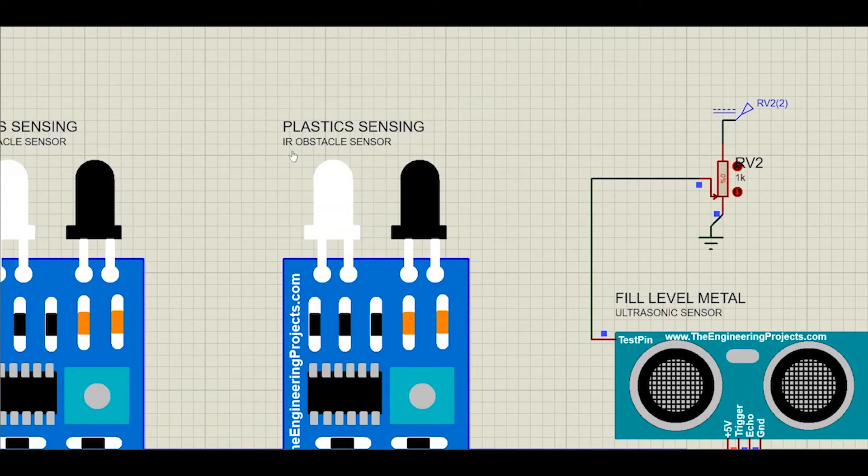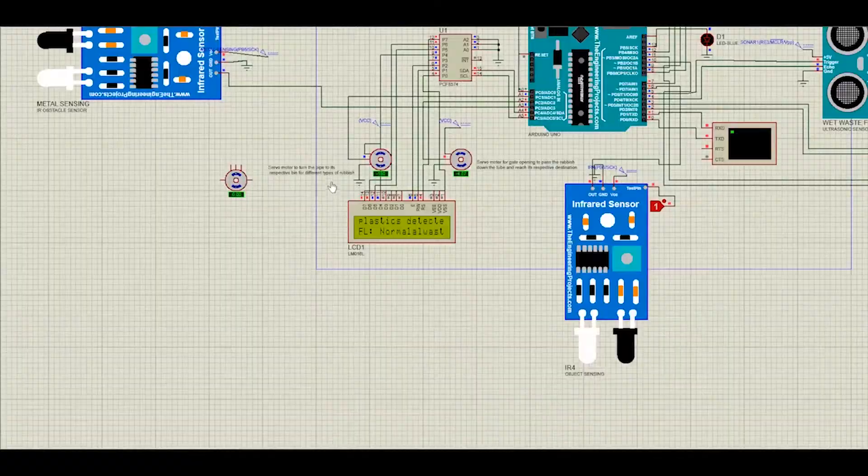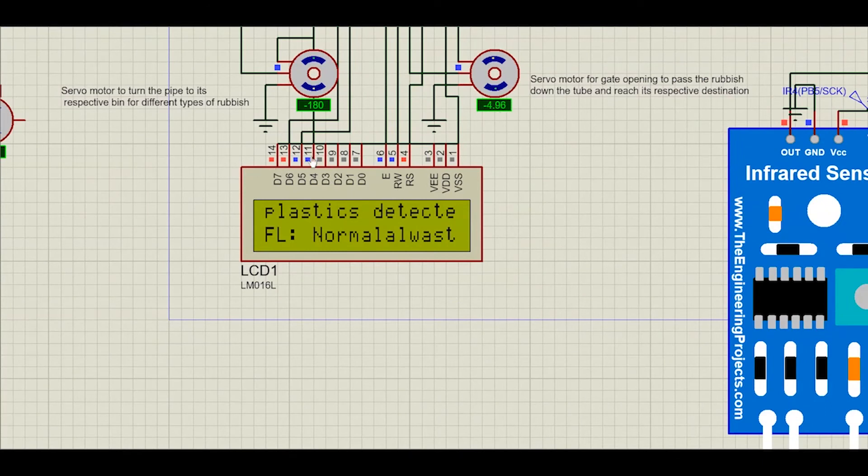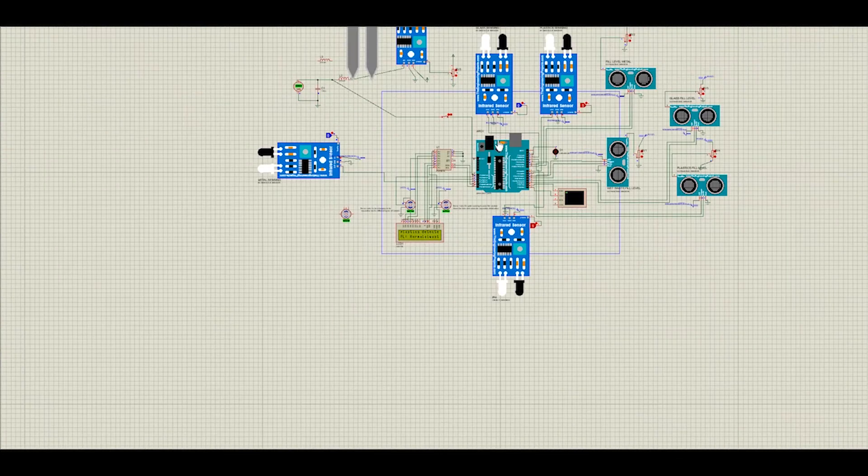When the glass sensing is turned on, we can see that it will output the result saying that glass is detected and the fill level is normal because we set the fill level conditions in glass compartments to be 22% space left. The same goes with when plastic sensor is turned on and the others is turned off, it will output the message saying that plastic is detected and the fill level is normal.